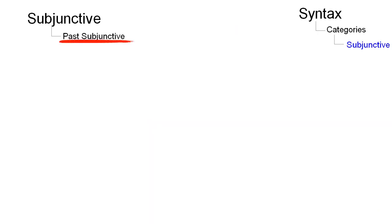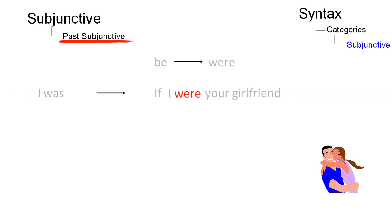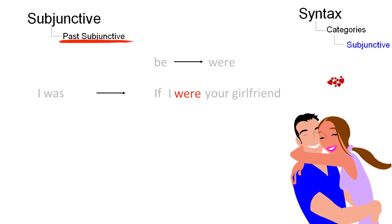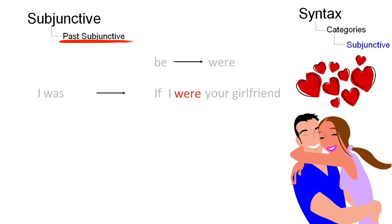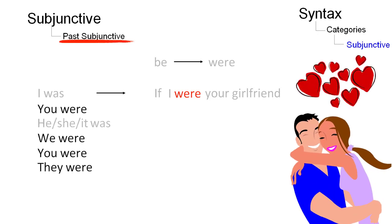Since the past subjunctive of 'be' is 'were,' 'I was' changes to 'I were,' as in 'if I were your girlfriend.' The same is true for he, she, and it, whereas the subjunctive of the other personal pronouns are unnoticeable.